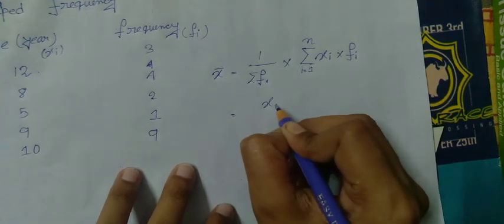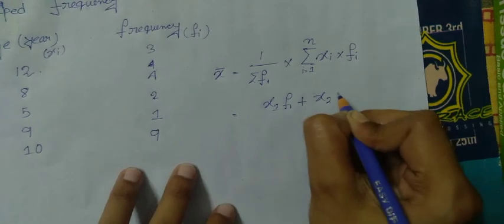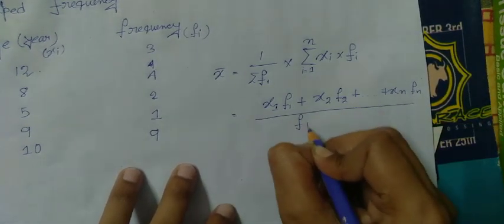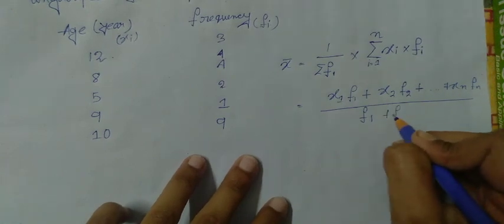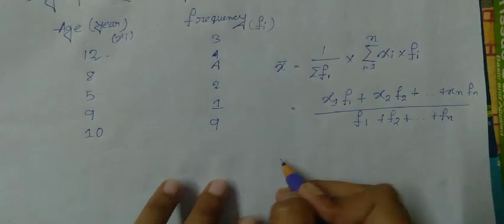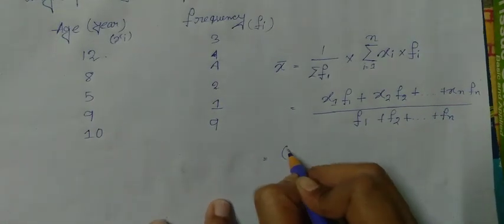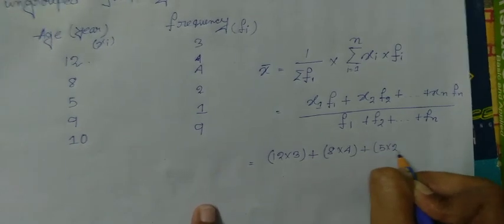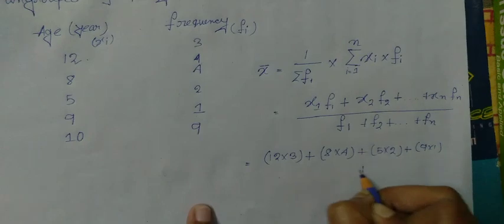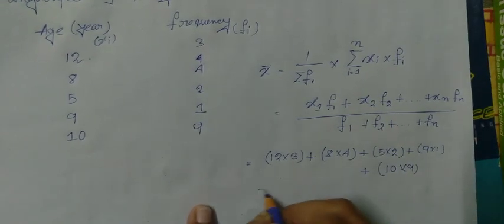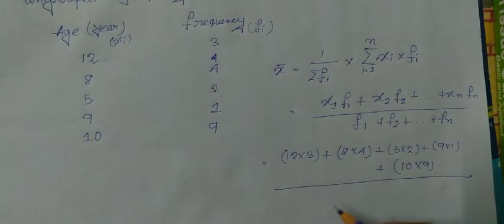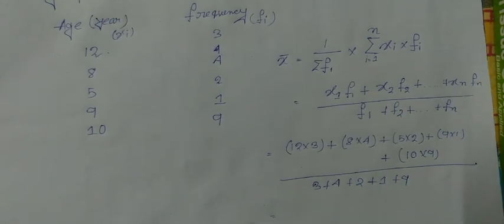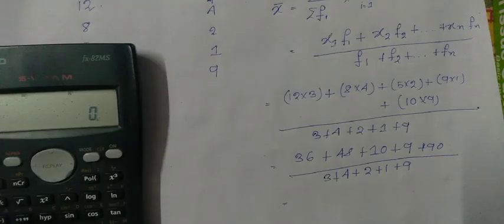Means x1 f1 plus x2 f2 plus xn fn by f1 plus f2 plus fn. So we calculate this 12 into 3 plus 18 to 4 plus 5 into 2 plus 9 into 1 plus 10 into 9, summation of frequency 3 plus 4 plus 2 plus 1 plus 9. We actually need a calculator so the answer is, so the mean value is 10.15.